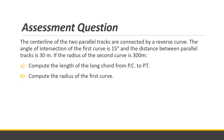Assessment question: The center lines of two parallel tracks are connected by a reverse curve. The angle of intersection of the first curve is 15 degrees, the distance between the parallel tracks is 30 meters, and the radius of the second curve is 300 meters. Compute the length of the long chord and the radius of the first curve. Submit your answer on Google Classroom.